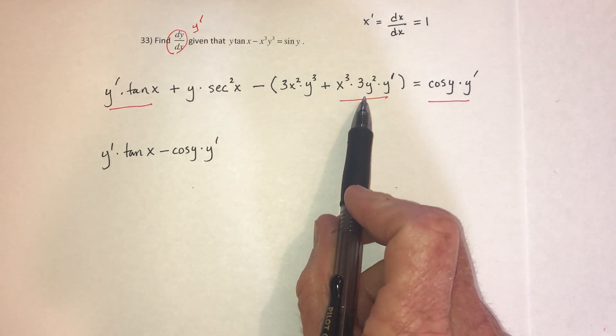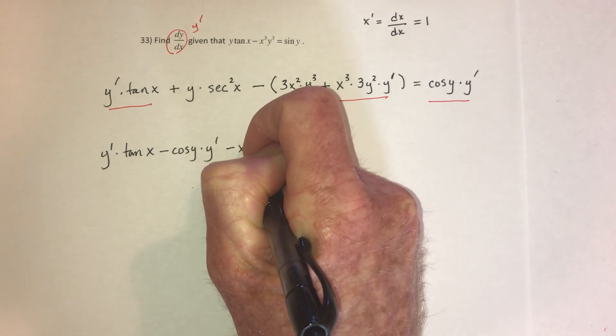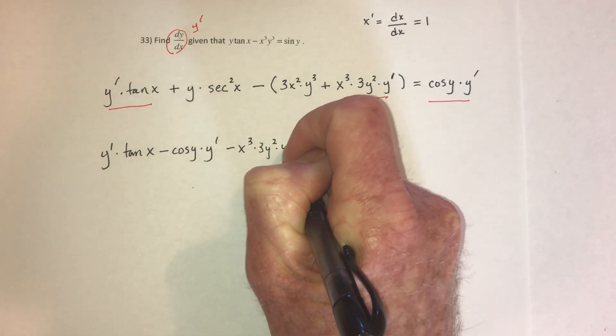And then there would also be this term. Because of this, it's going to be minus x cubed 3y squared times y prime.